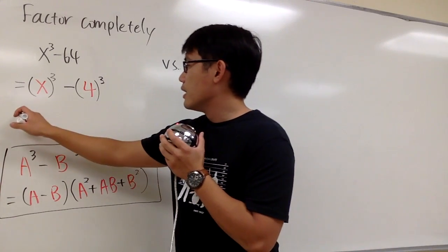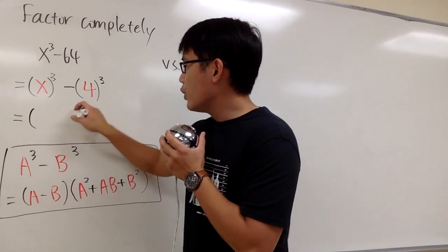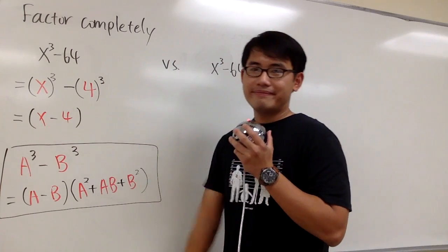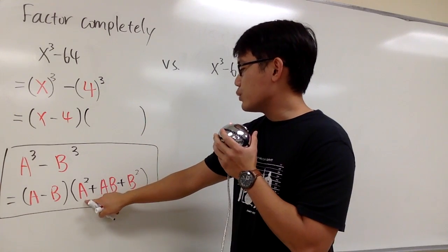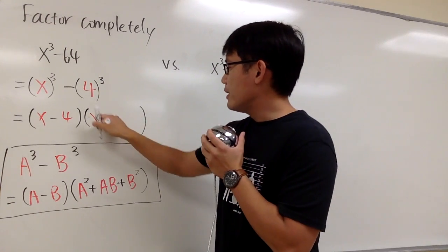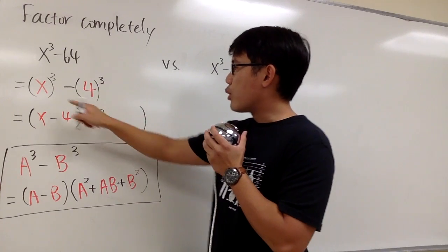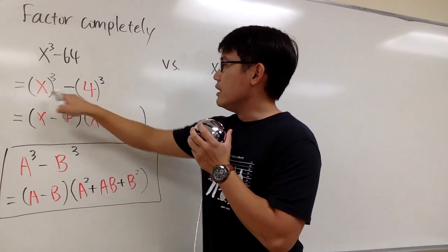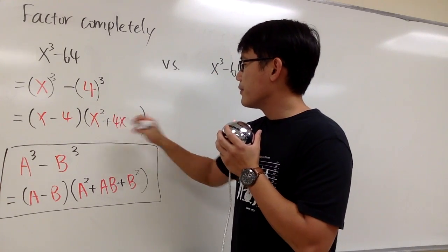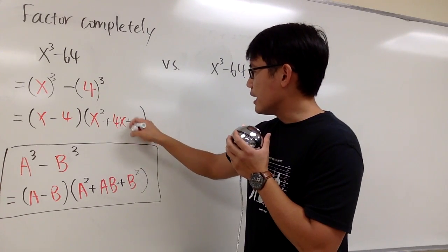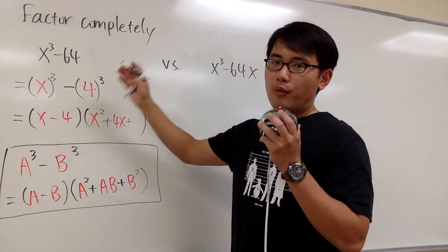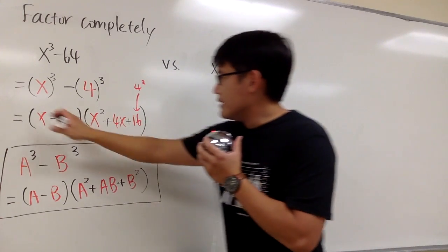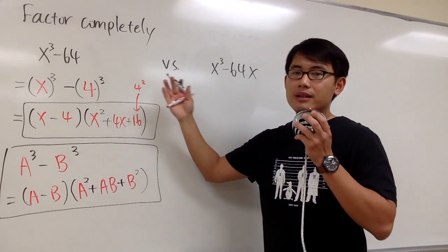So let's apply this. Here x is the a and 4 is the b. For the first parentheses, we have x minus 4, matching a minus b. For the second parentheses: a squared gives us x squared, then the product of a and b — note that b is positive 4, not negative 4, it's what's inside the parentheses — so a times b is x times 4, giving us 4x. And then b squared: 4 squared is 16, so we add 16. The final answer for the first example is (x - 4)(x² + 4x + 16).